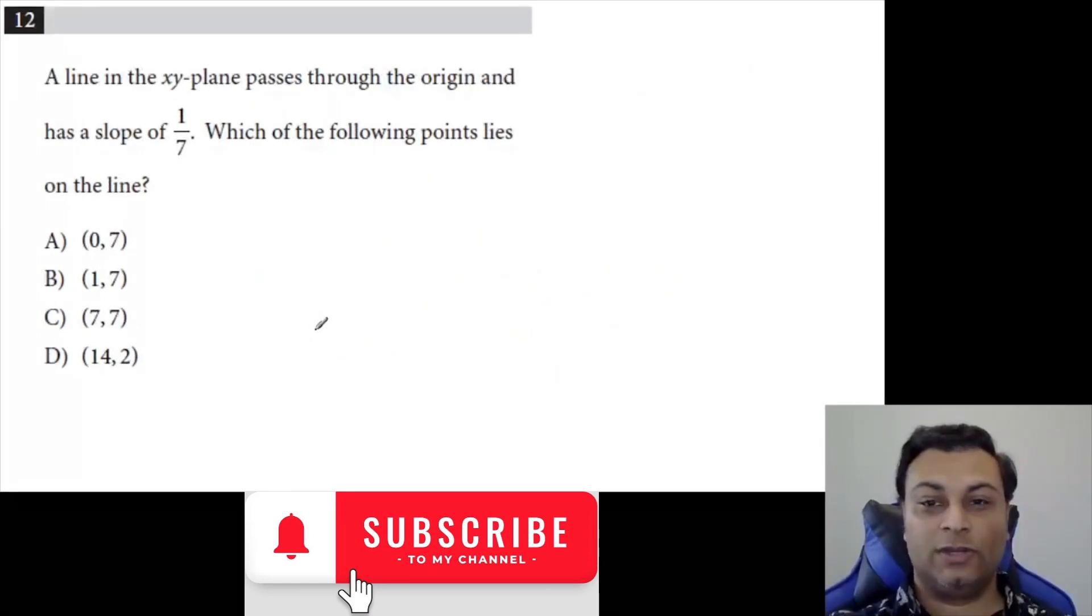Question 12. A line in the x-y plane passes through the origin and has a slope of 1/7. Which of the following points lies on that line?